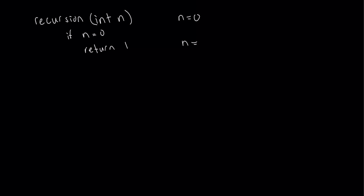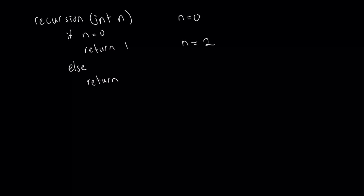Now let's say that n equals 2. We have to make a statement, and we're going to say else — so assuming n is greater than 0, for the rest of the function, we're going to say return n, and then multiply this by the recursion of n minus 1. This is going to be calling back on the recursive function, and I'm going to show you just how that works.